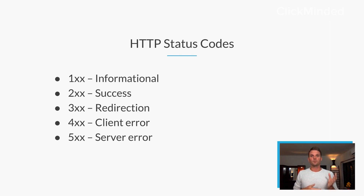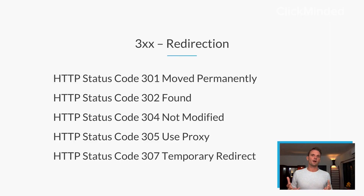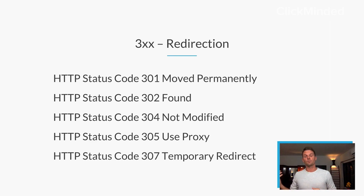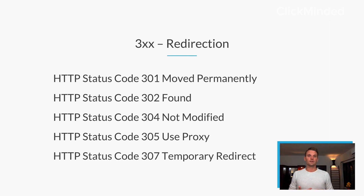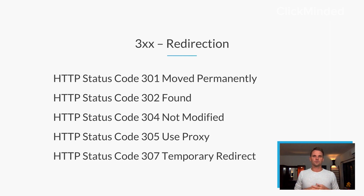The 300 block are for redirects — so you requested an address, but you were sent somewhere else, and there are a bunch of different types of redirects: a 301 redirect, a 302, a 304, 305, and 307. We're going to talk about all these a little bit more, but any status code in the 300 block will be a redirection request.